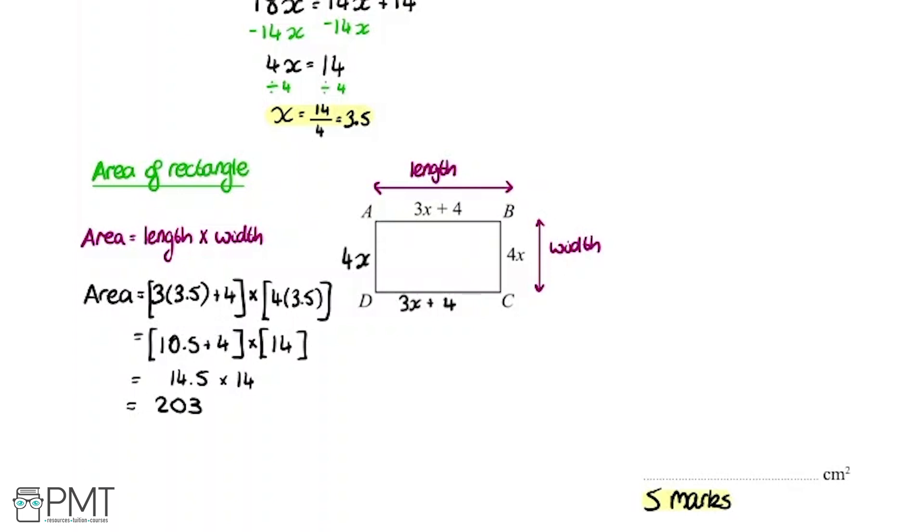Remember because it's an area and we know all the lengths are in centimeters we can put the units as centimeters squared. So last but not least we're going to write that in the answer box. 203 centimeters squared.